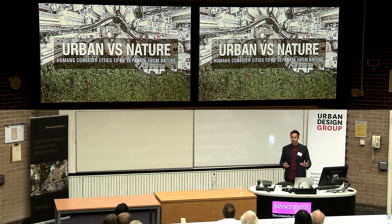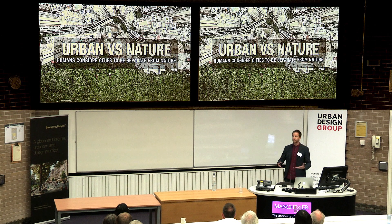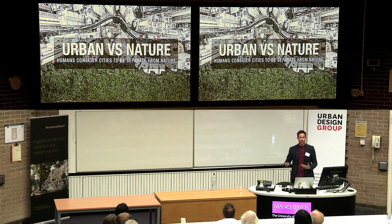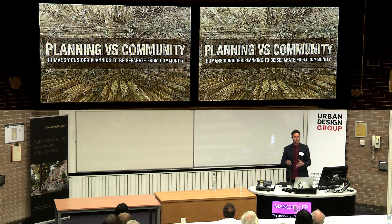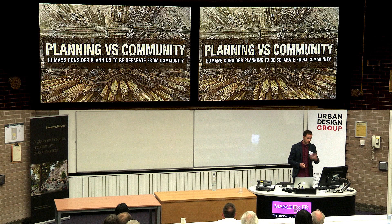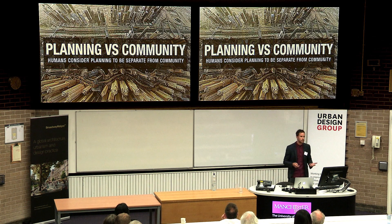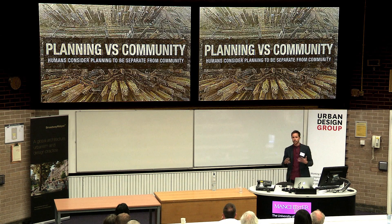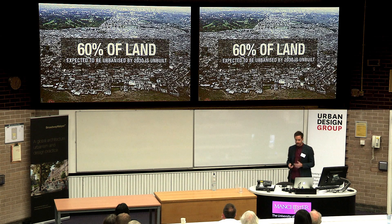With this growth, mass production, and thriving for wealth, we've created a sheer divide in how we build our cities. We've created very much an urban and natural component which are not working together. We've also created a separation between planning and community — we're planning for community, not actually planning with the community. These two divergent approaches have created real problems that are critically seen today.